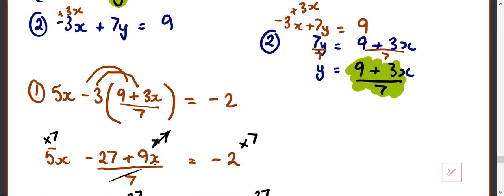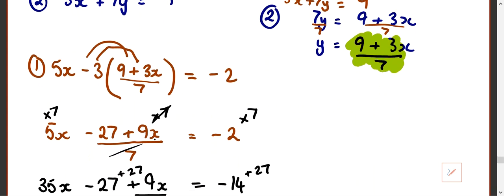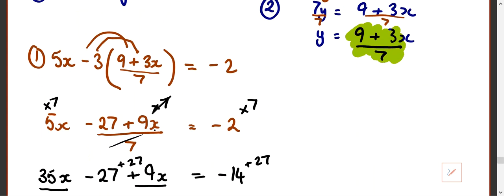So we've got this fraction that's been substituted in. And we need to expand the brackets. Now remember when you expand the brackets, you only multiply the numerator of a fraction when you multiply. You don't multiply the denominator as well, otherwise you don't do a multiplication.